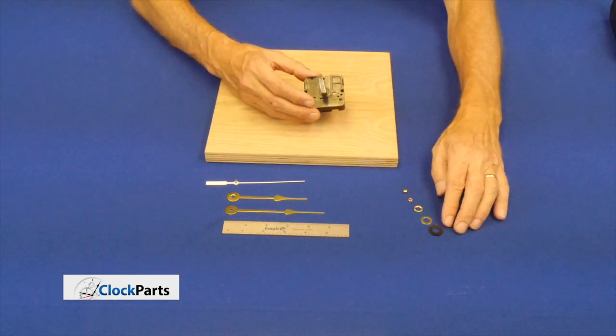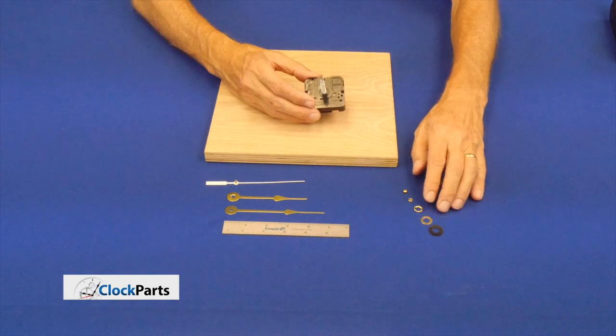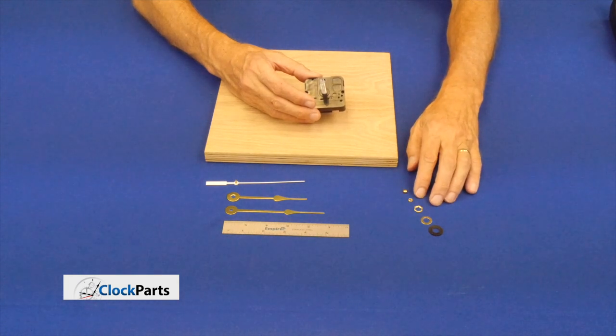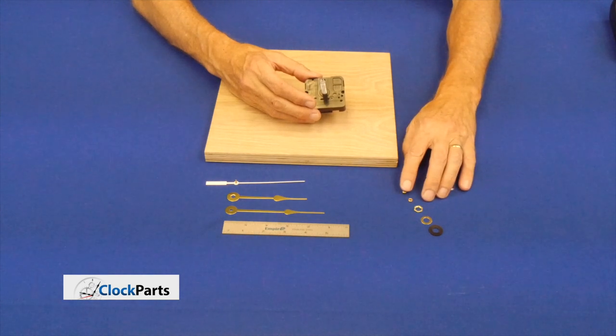In this bag is a rubber washer, a brass washer, a hex nut, a minute hand nut, and a cap nut. You may or may not use the cap nut.